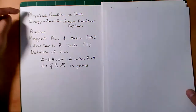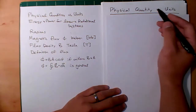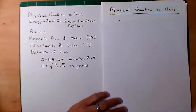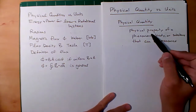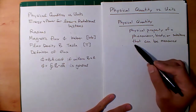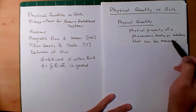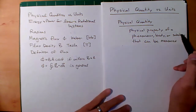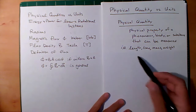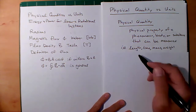Let's begin with our review: physical quantities versus units. A physical quantity is a physical property of a phenomenon, body, or substrate that can be measured. The key is the ability to measure it. Some examples we've seen in ET250 are length, time, mass, weight, voltage, current, resistance — stuff like that. They can be measured.